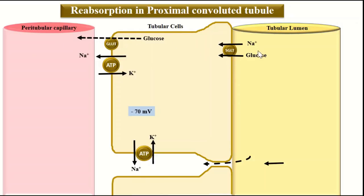Almost 100 percent of glucose is reabsorbed in the proximal convoluted tubule — 90 percent in the early portion and 10 percent in the late portion. Reabsorption of substances like amino acids, phosphate and lactate also follows this same type of secondary active co-transport with sodium via their respective transporters. Almost 100 percent of amino acids are also reabsorbed in the proximal convoluted tubule through this co-transport process.